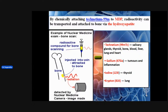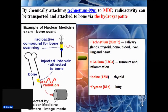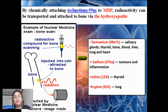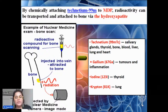Radionuclides cannot be directly inserted into the body — they must be combined with a biocompatible chemical to reach target organs. For example, technetium-99 is combined with MDP (methylene diphosphate), which is compatible with bone. When technetium-99 bound to MDP is injected into a vein, it is attracted to the bone because it is biocompatible with the hydroxyapatite crystals of bone.